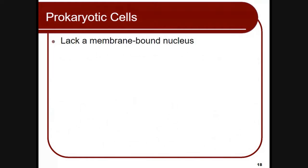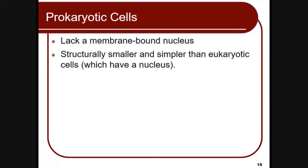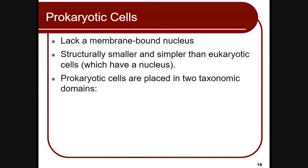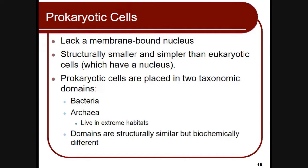Prokaryotic cells lack a membrane-bound nucleus, meaning there is no boundary on the nucleus, although there is a nucleus. The structure is really small and it's a simpler type of cell compared to eukaryotic cells, which have a nucleus. Prokaryotic cells are placed in two taxonomic domains: bacteria and archaea. Archaea usually live in very extreme habitats. These domains are structurally similar but biochemically different.